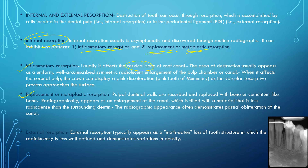In replacement or metaplastic resorption, the pulpal or dentinal walls are resorbed and replaced with bone or cementum-like material. Radiographically it appears as an enlargement of the canal filled with material less radiodense than surrounding dentine, and often demonstrates partial obliteration of the canal. External resorption is generally seen as a moth-eaten appearance with less well-defined radiolucency and variation in tooth density.